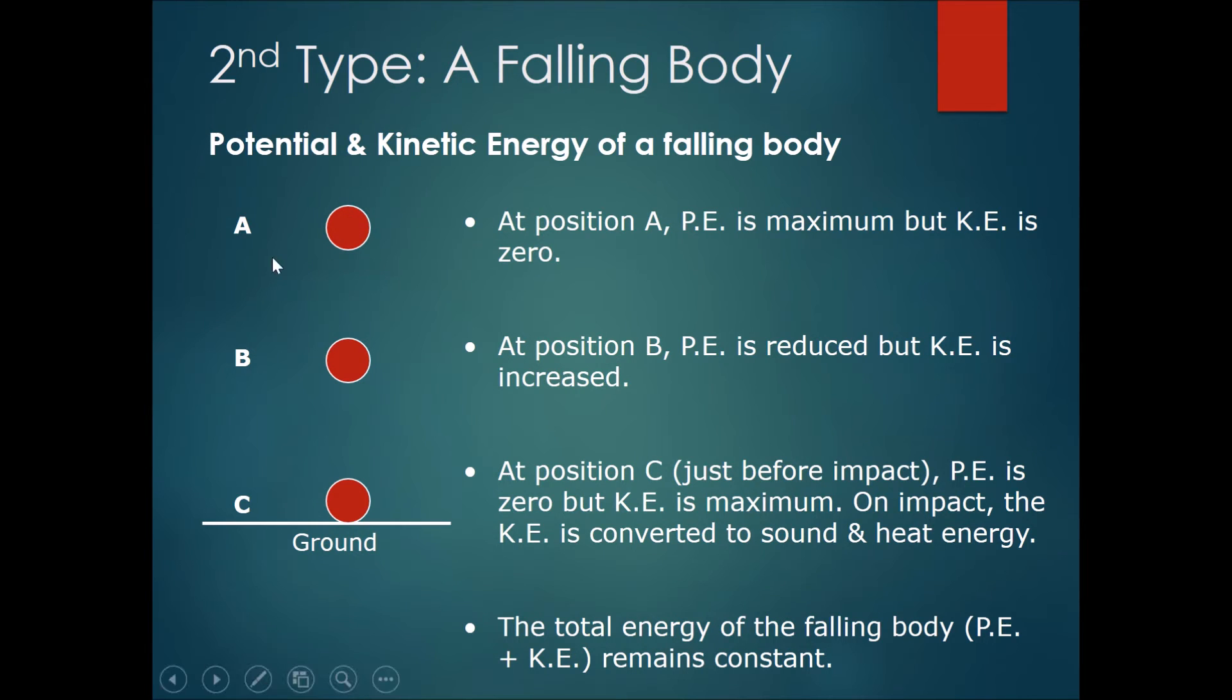And then at this point, it starts to fall. In the middle of its fall, this much GPE has been converted into KE. Therefore, the ball will have some speed. Therefore, it has some KE. It has reduced its gravitational potential energy, but it has increased its kinetic energy.